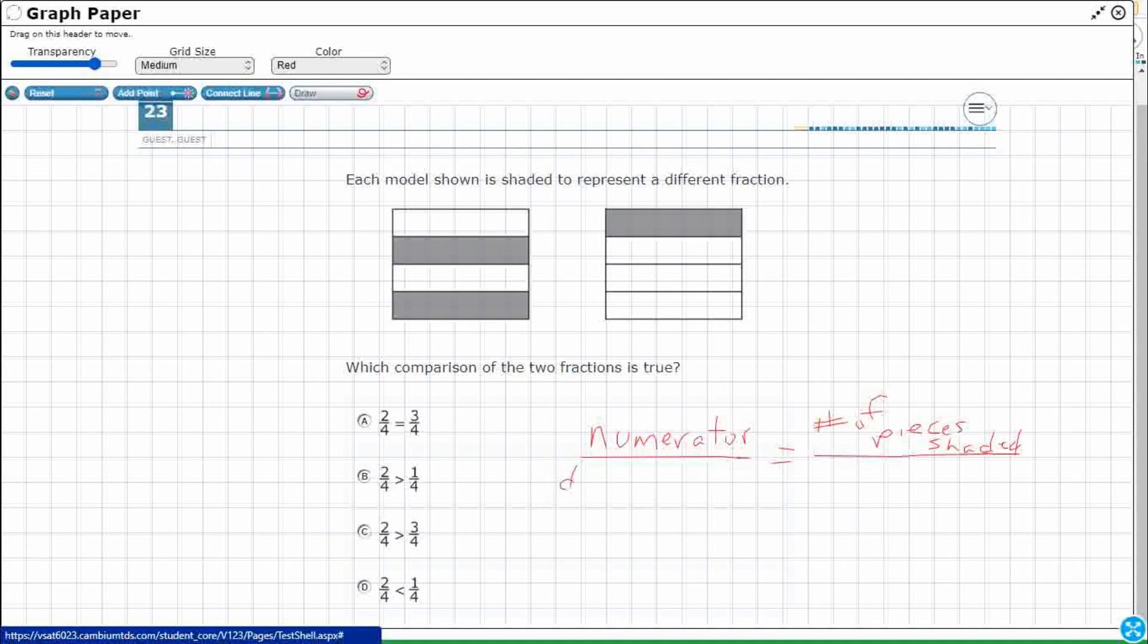And then your bottom number is your denominator. And the denominator is, that's always going to stay the same, that's just total. How many total pieces do we have?